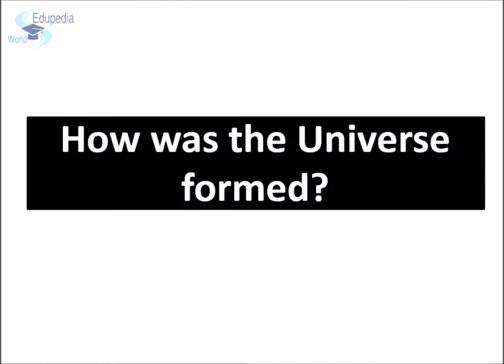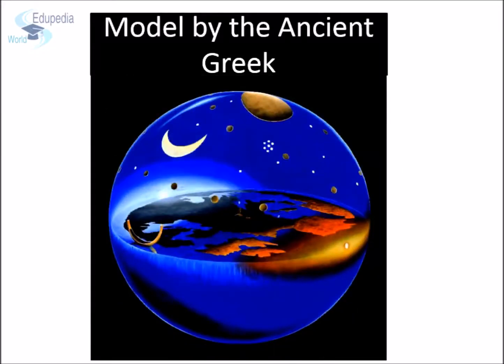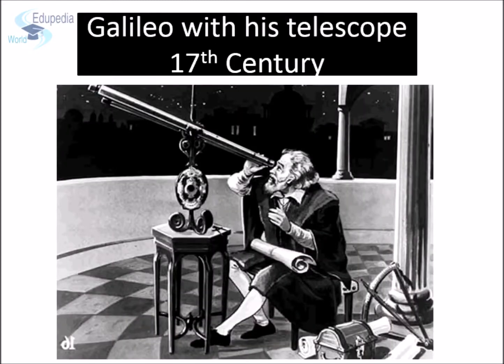The universe can be defined as everything that exists in space. The problem is no one knows exactly how big it is and where it ends. Since ancient times humans have gazed at the vast dark expanse above, trying to unravel the mysteries of the universe. The ancient Greeks thought the universe contained only Earth at the center, the Sun, the Moon, five planets, and a sphere to which all the stars were attached. Most people held this basic idea for centuries, until Galileo first used a telescope to look at the stars in the 17th century.